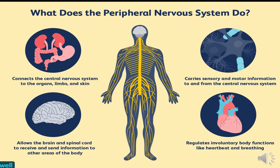The central nervous system controls the majority of the body's activity, so you might be wondering what the peripheral nervous system does. The PNS connects the central nervous system to the organs, limbs, and skin. It allows the brain and spinal cord to receive and send information to other areas of the body, carries sensory and motor information to and from the CNS, and controls and regulates involuntary body functions such as heartbeat and breathing.